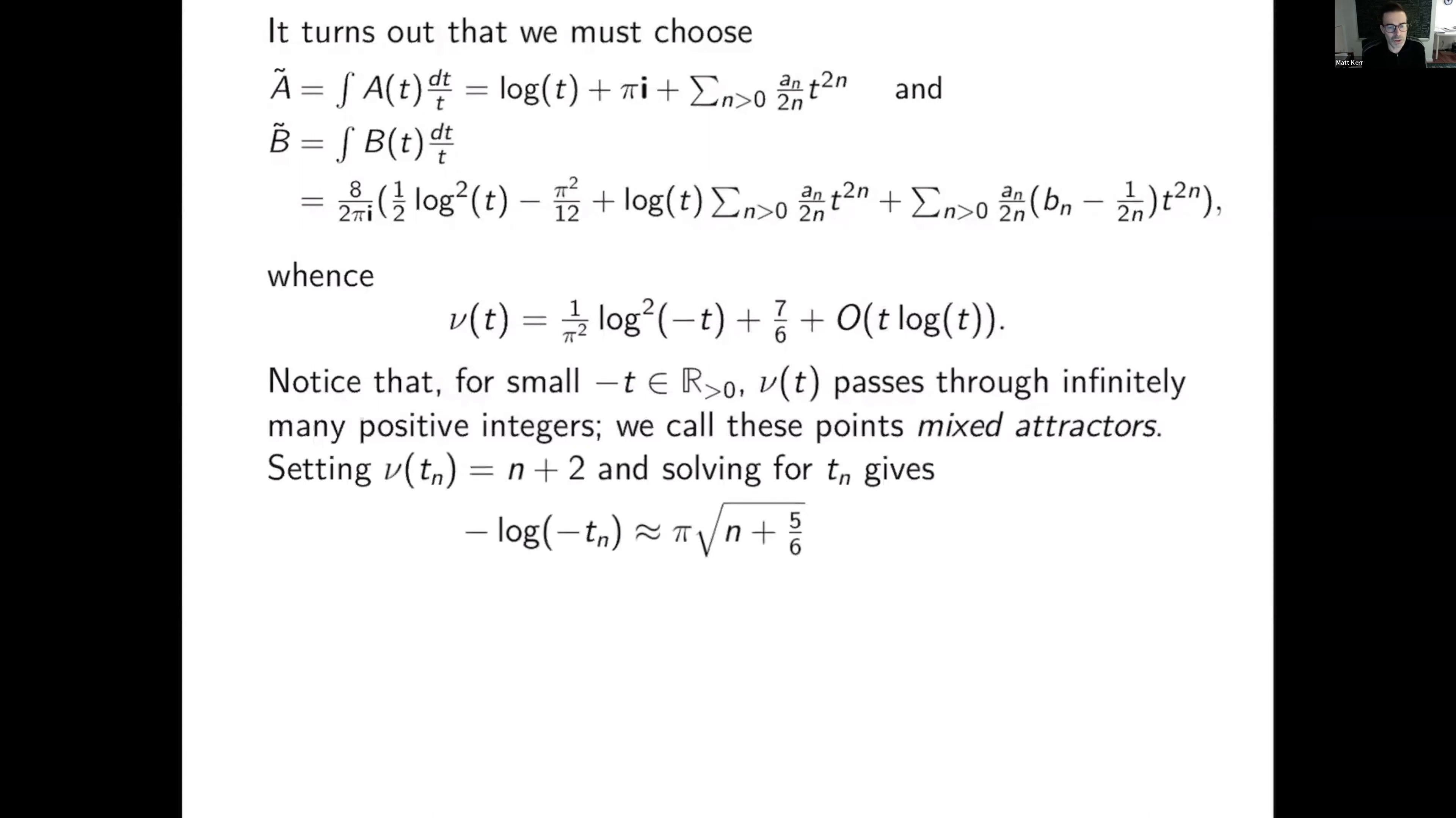The analogy here is to attractor points for families of compact Calabi-Yau threefolds, because here we have an integral class in F1 of variation and mixed Hodge structure that would not typically be there for most points. And that's exactly what a rank one attractor point is, in the case of compact Calabi-Yau threefolds. So now setting nu of t_n equals n plus two and solving for t_n to get these mixed attractor points, we get approximately minus log of minus t_n is pi times square root of n plus five sixths. The five sixths comes from two minus seven sixths.